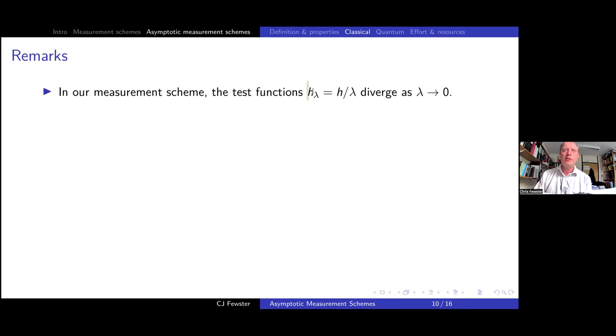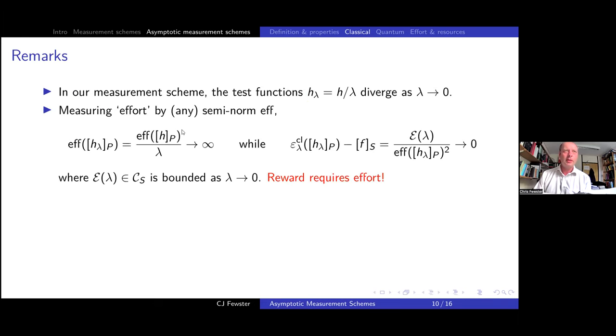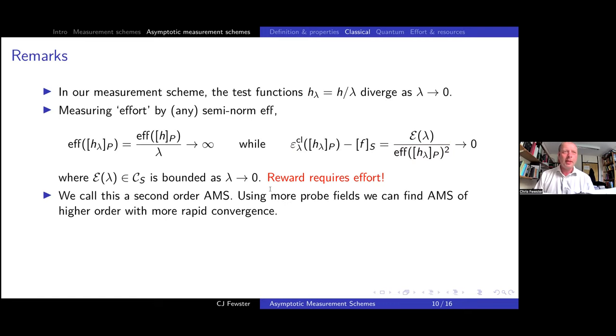This is a system observable which can be written in this way in terms of the h, the advanced minus retarded for the probe theory and our compactly supported function rho. And then what we need to do is sort of reverse engineer h and rho so that we get our desired system observable by this formula here. And then we have an AMS. And the theorem is this can be done. It takes quite a while to do, but it is all doable. An interesting fact here is that the test functions we use are diverging as lambda goes to zero. So we can sort of ascribe an effort to these just by taking any semi normal way, any measurement of the size of one of these test functions, which we'll call F for effort.